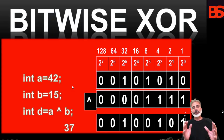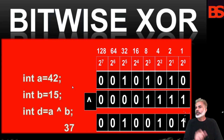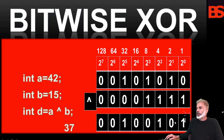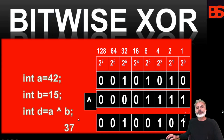In this statement we are applying the bitwise exclusive OR (XOR) operator. XOR combines bits such that if exactly one operand is 1, the result is 1; otherwise the result is 0. So 0^1 = 1, if both are 1 result is 0, both 0 result is 0, and 1^0 = 1. The result is 37, which is assigned to D.